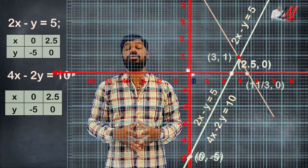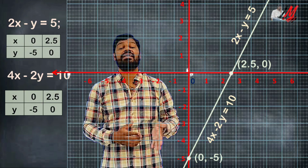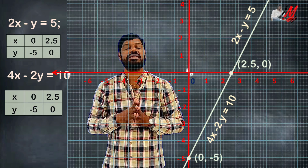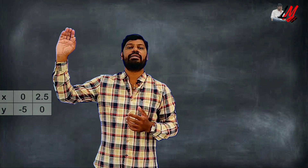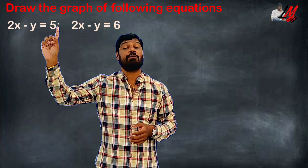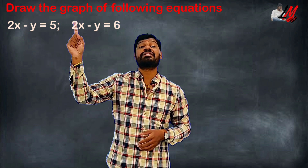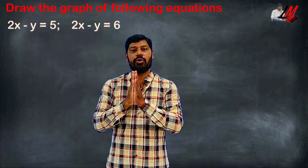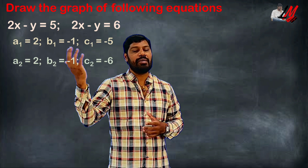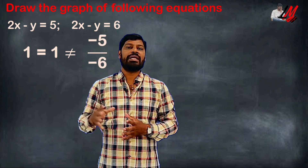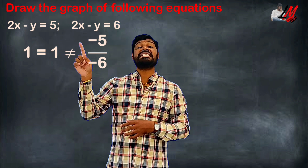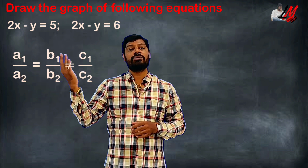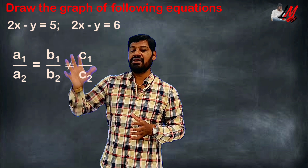But if there are no solutions, the lines are parallel. Take this example: draw the graph of 2x minus y equal to 5, and 2x minus y equal to 6. These equations differ only in the constant value. Checking: A1 by A2 equals 1, B1 by B2 equals 1, but C1 by C2 equals 5 by 6, which is not equal. So A1 by A2 equals B1 by B2, but is not equal to C1 by C2.